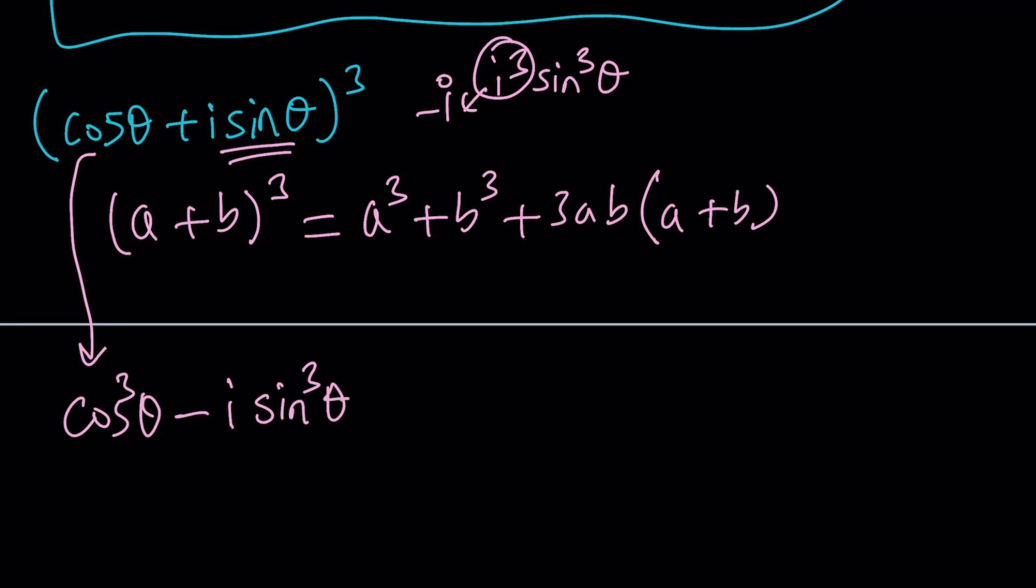So I got the first part and now 3AB is just going to be multiply these two things. 3I cosine times sine. And then this is going to be multiplied by A plus B again. And that is cosine theta plus I sine theta.